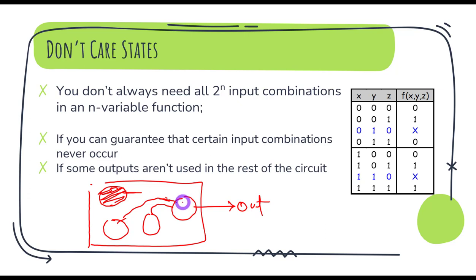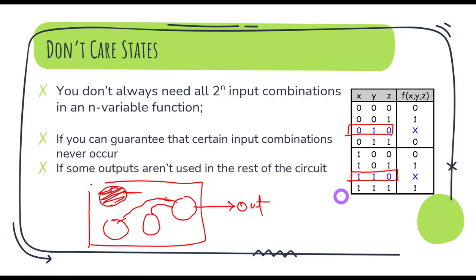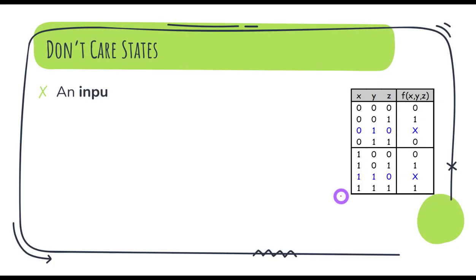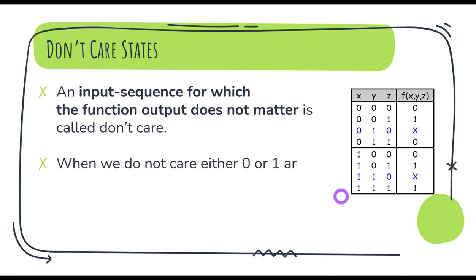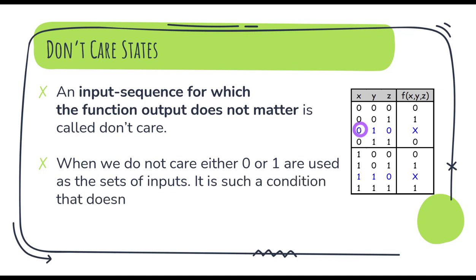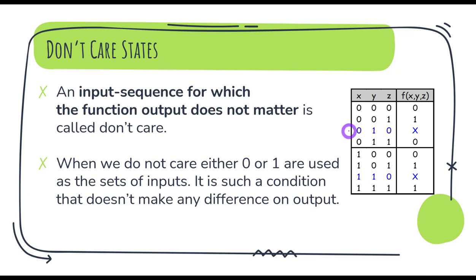To summarize: if we can guarantee that certain input combinations won't occur, we can call them don't care states because they won't actually affect our output. Any input sequence which doesn't affect our output — whether we treat it as a zero or a one, it's not going to happen anyway and it's not making any difference — we call it a don't care condition or a don't care state.